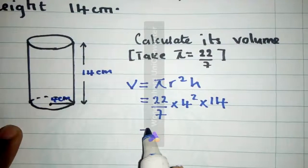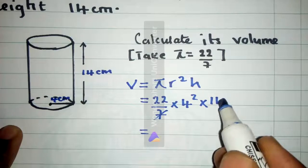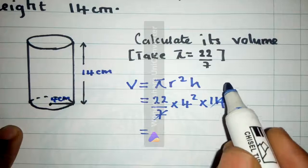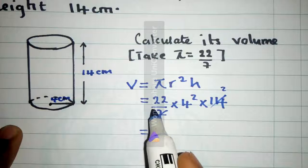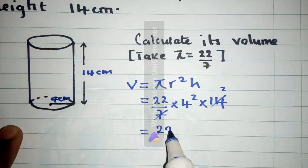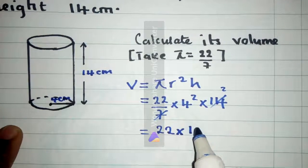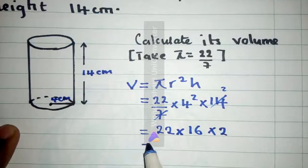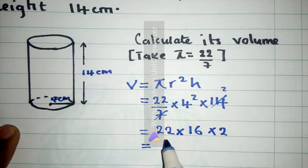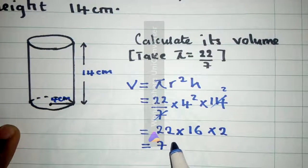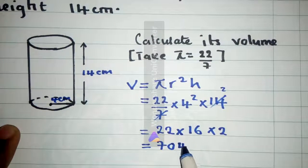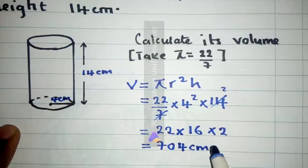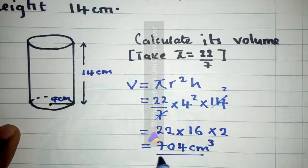So here we can solve things. This 7 can go into 14 how many times? 2 times so it will be 22 times 16, this 4 squared is 16 times 2 and when we work out we are going to have 704 cm cubed because it is volume.